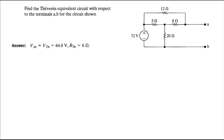For more videos visit forsakeofducation.com. Let's do this problem where we have to find the Thevenin equivalent circuit with respect to terminals A and B for the circuit shown. The first thing we're going to do is find R_Thevenin.